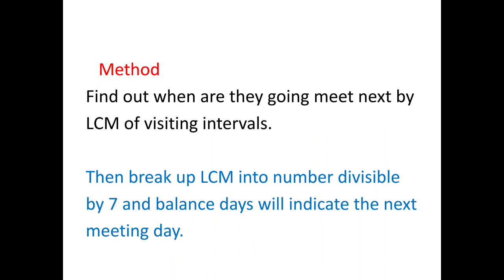Since we have to find out a common day, we will find out the LCM of the given days. Then break up the LCM into numbers divisible by 7. If it is a perfect division, then that particular number becomes the meeting day again. If you divide this number by 7 you can find out which day it is occurring. If it is not divisible by 7, then the remainder will indicate the number of days corresponding to the 7 days of a week.